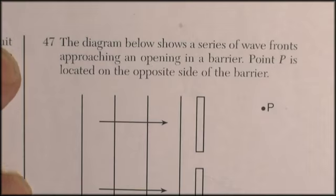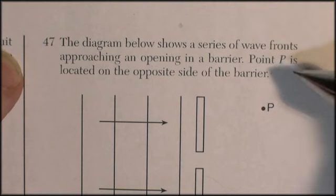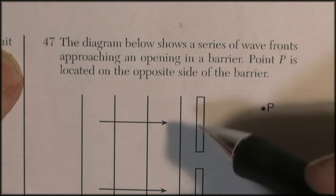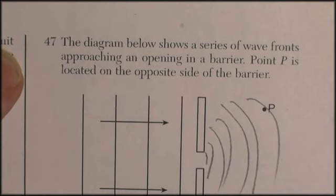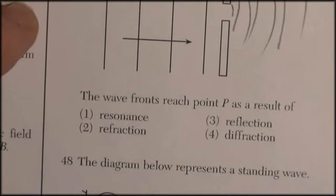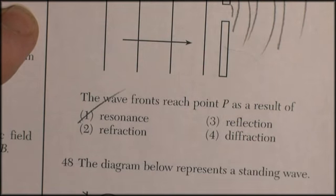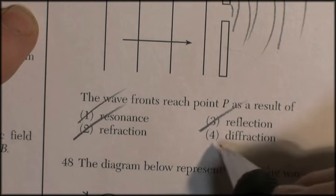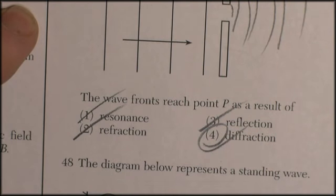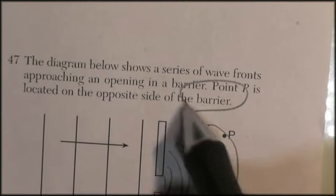Question 47 is another vocabulary one. The diagram shows wave fronts approaching an opening in a barrier. Point P is located on the opposite side. Somehow waves reach point P. Resonance? Refraction is bending, going from one material to another. Reflection is bouncing. Diffraction is waves going around a barrier. We have a barrier, and that's got to be diffraction.